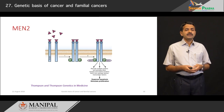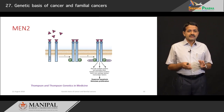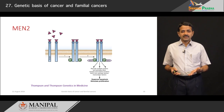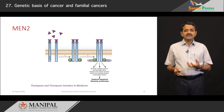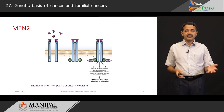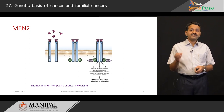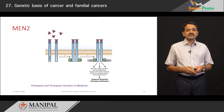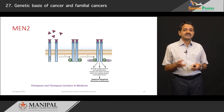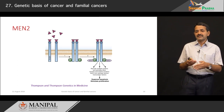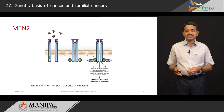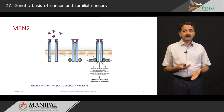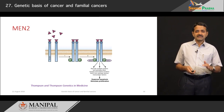In multiple endocrine neoplasia type 2, the mutation in the RET oncogene causes the protein to dimerize spontaneously even in the absence of a ligand. In normal cells, ligand binding causes the protein to dimerize and activates a cascade of phosphorylation reactions, suppressing apoptosis and stimulating proliferation. But in cancer, when there is a mutation in the RET gene, this activation becomes automatic even without ligand binding, and cancer is initiated.